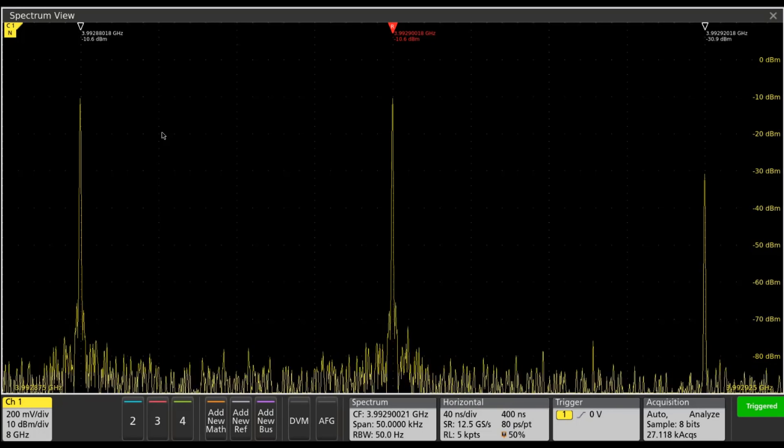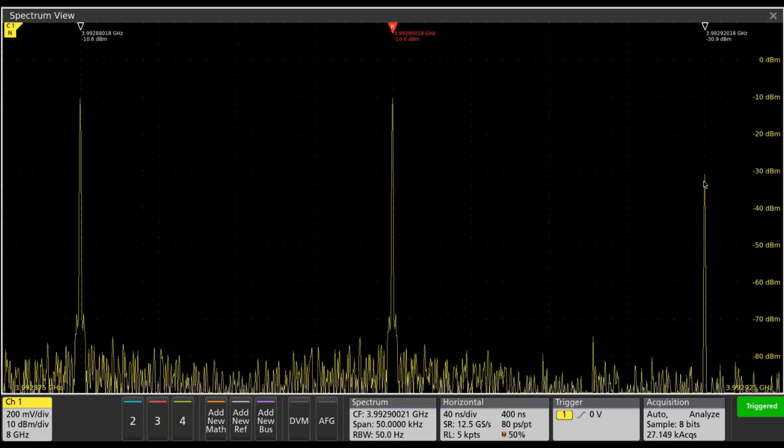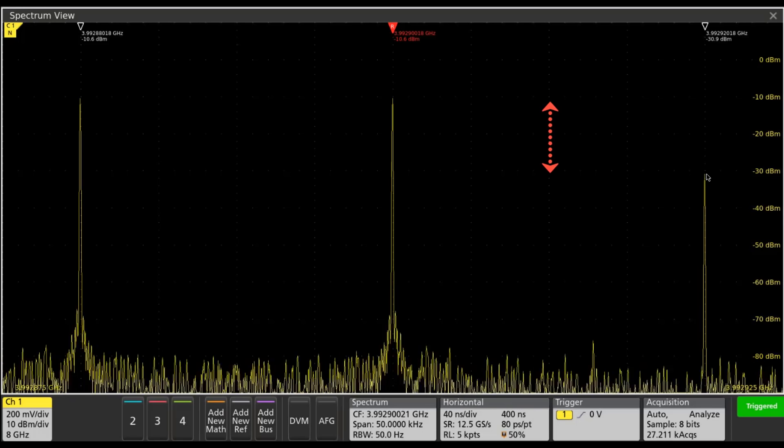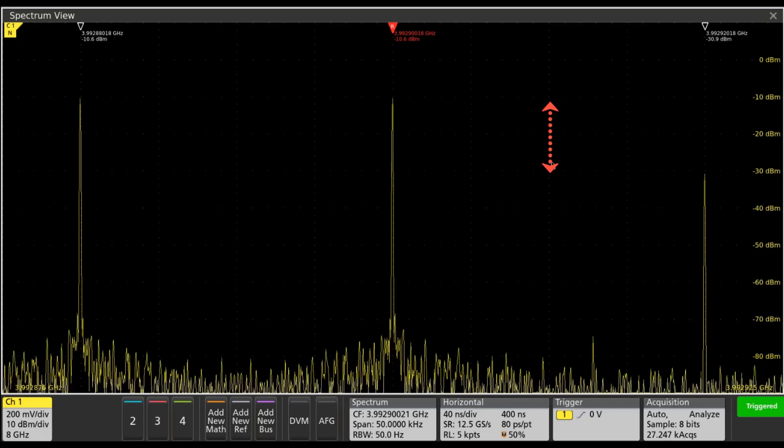We can see at this set of settings that my third-order intermodulation distortion product is only about 20 dB lower than the input signal level.